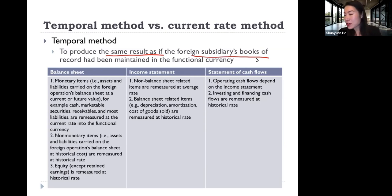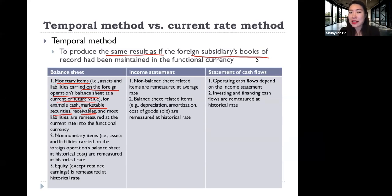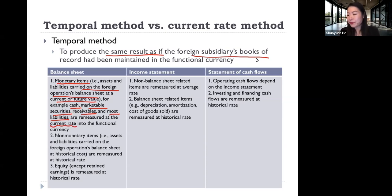Specifically on the balance sheet, all of the monetary items — for example, cash, marketable securities, and receivables — are monetary items, which are assets that the firm carries on the balance sheet at current or future value. All of those items, including most of the liabilities, are measured at the current rate. All of the non-monetary items are measured using the historic rate. For equity, except retained earnings, it is also measured at historic rate.